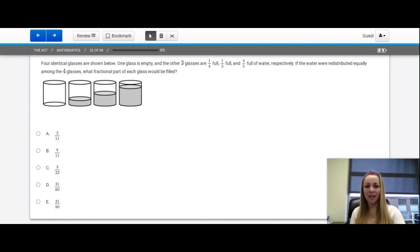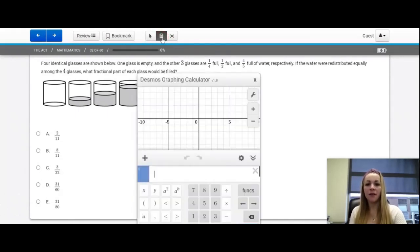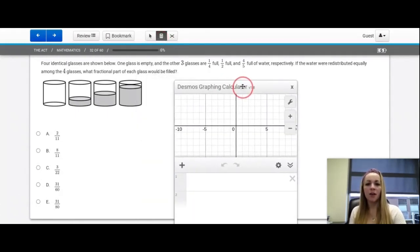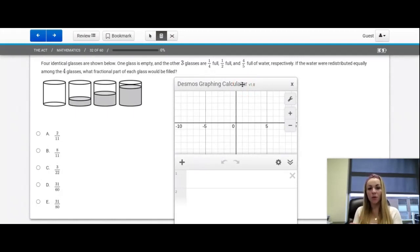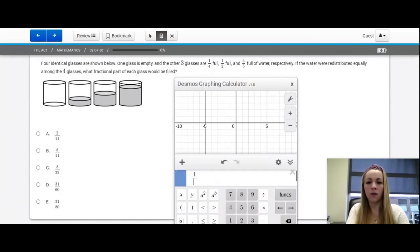This is a great problem for Desmos. We could spend time finding common denominators. But we're going to come to our calculator and what we want to do is we want to add up the total amount of water. So let's do one fourth plus one half plus four fifths. That gives us 1.55.